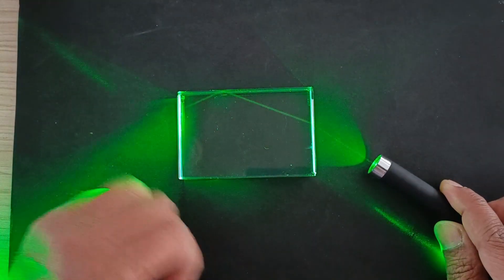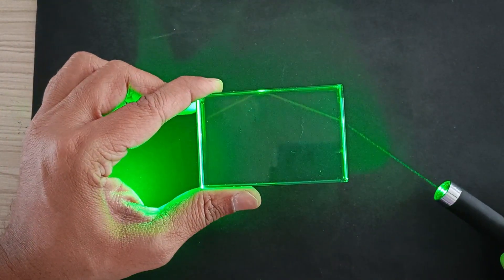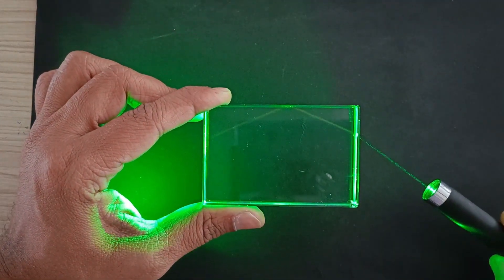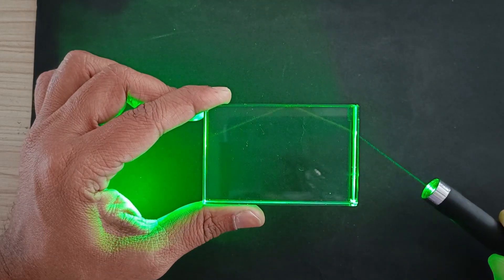If the laser light enters the glass slab and strikes its another perpendicular surface with an angle more than the critical angle, total internal reflection is observed.